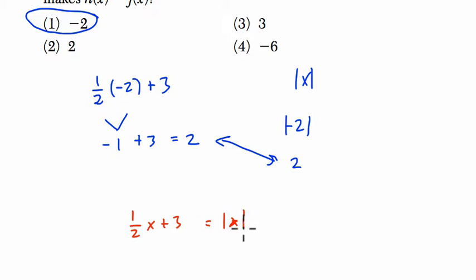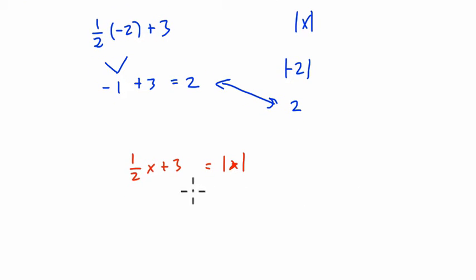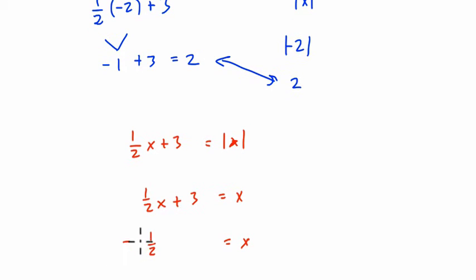That means that the absolute value, since it applies to both negative and positive values, that means in one case x equals 1 half of x plus 3, and in another case, if you have the negative of this expression, it will still equal x and still get you the same result.